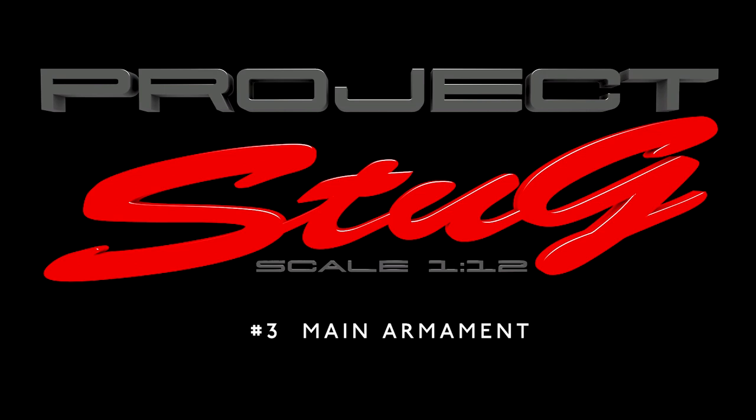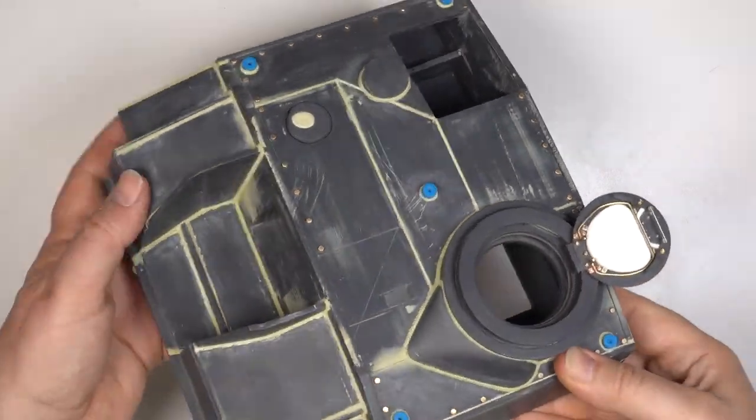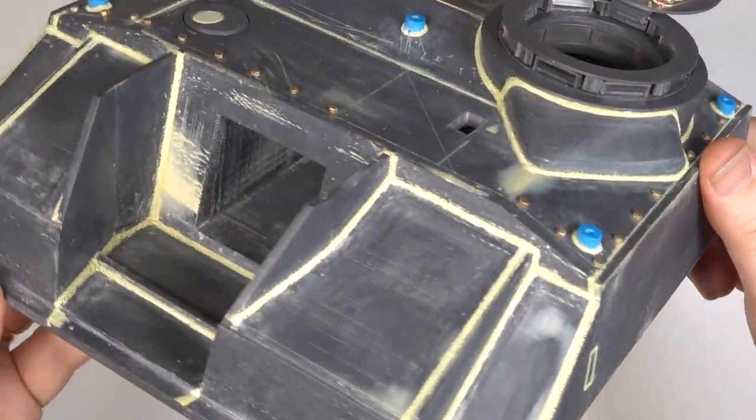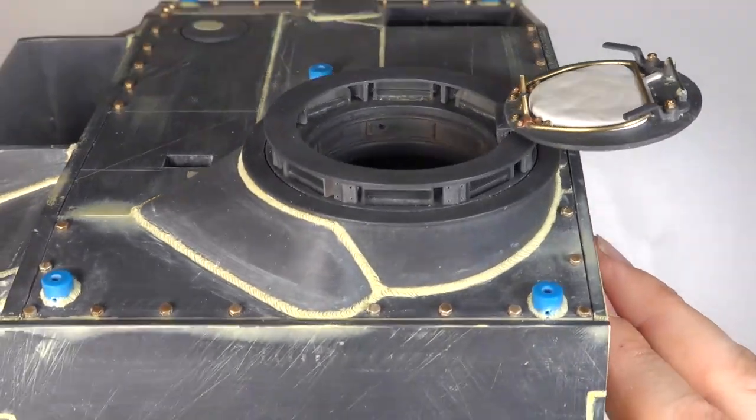Hello and welcome to episode 3 of Project Stug. In the last episode, you saw how I designed and built the Commander's Cupola and added the weld seams to the fighting compartment of the Stug.